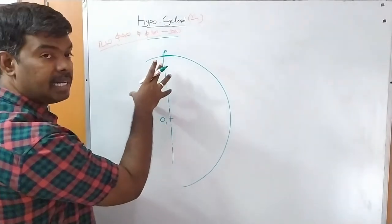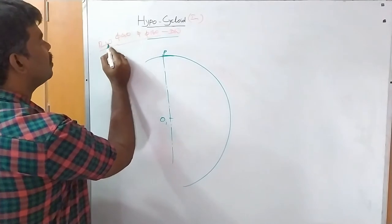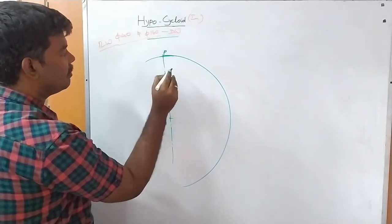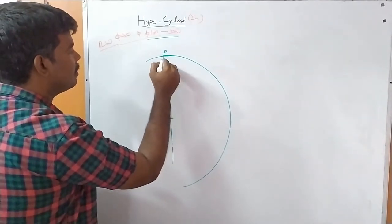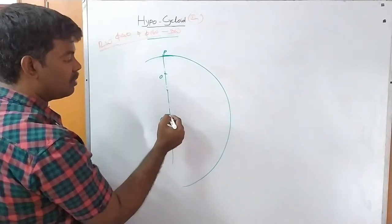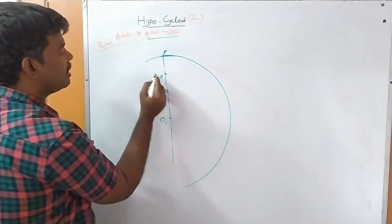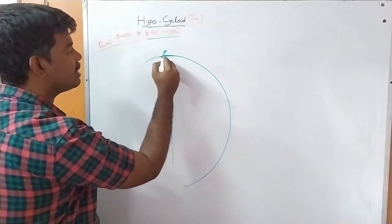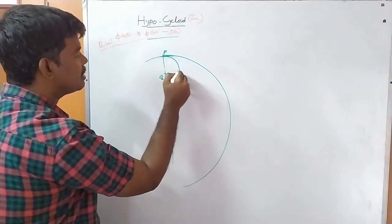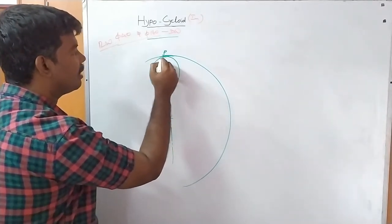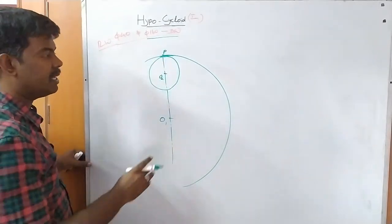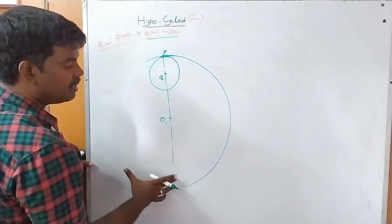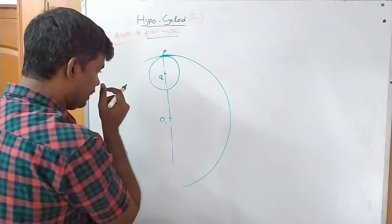The intersection point is point P — the contact point between the rolling wheel and the directing wheel. The rolling wheel diameter is 40, therefore radius is 20. From point P, towards center O1, fix the center distance of 20 — that point is called O2. Now with O2 as center and 20 as radius, draw a circle — that is the rolling wheel, rolling inside the directing wheel.